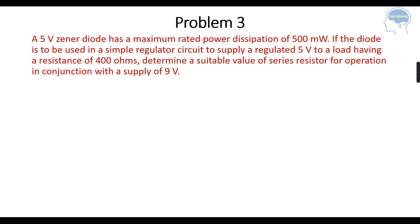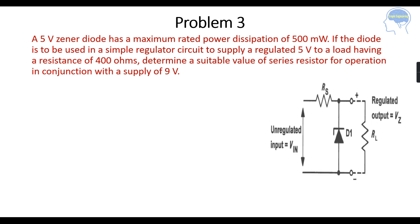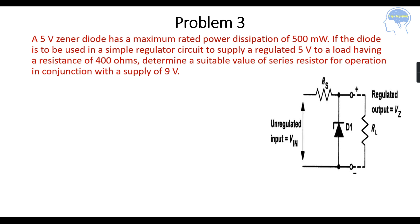Next we will see a problem related to the Zener diode. A 5 volt Zener diode has a maximum rated power dissipation of 500 milliwatts. The diode is to be used in a Zener regulator circuit to supply a regulated 5 volts to a load having a resistance of 400 ohms. Determine a suitable value of series resistor in conjunction with a supply of 9 volts.